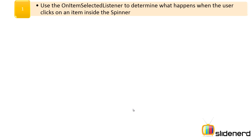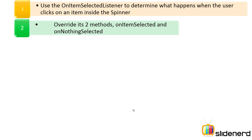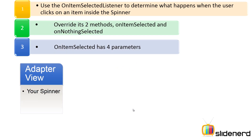After setting up the adapter, you need to handle what happens when the user selects an item. Step 1: use the OnItemSelectedListener to determine what happens when the user selects an item. Step 2: there are two methods — onItemSelected and onNothingSelected.